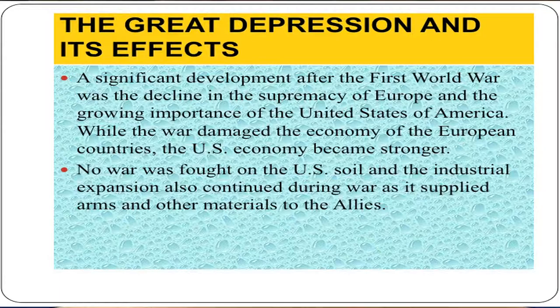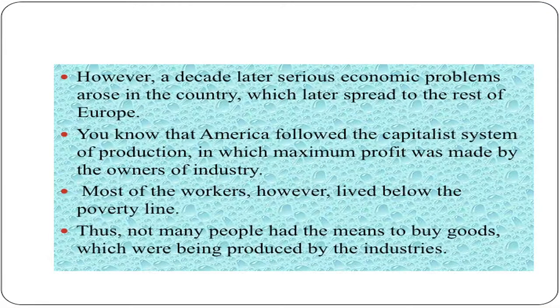The year 1929 saw one of the greatest depressions the world ever faced. A significant development after the First World War was the decline in the supremacy of Europe and the growing importance of the United States of America. While the war damaged the economy of the European countries, the United States economy became stronger. No war was fought on US soil and industrial expansion continued during the war as it supplied arms and ammunition to the Allies. However, a decade later, serious economic problems arose in the country which later spread to the rest of Europe. America followed the capitalist system of production in which maximum profit was made by the owners of industry. Most workers, however, lived below the poverty line. Thus, not many people had the means to buy goods being produced by the industries.